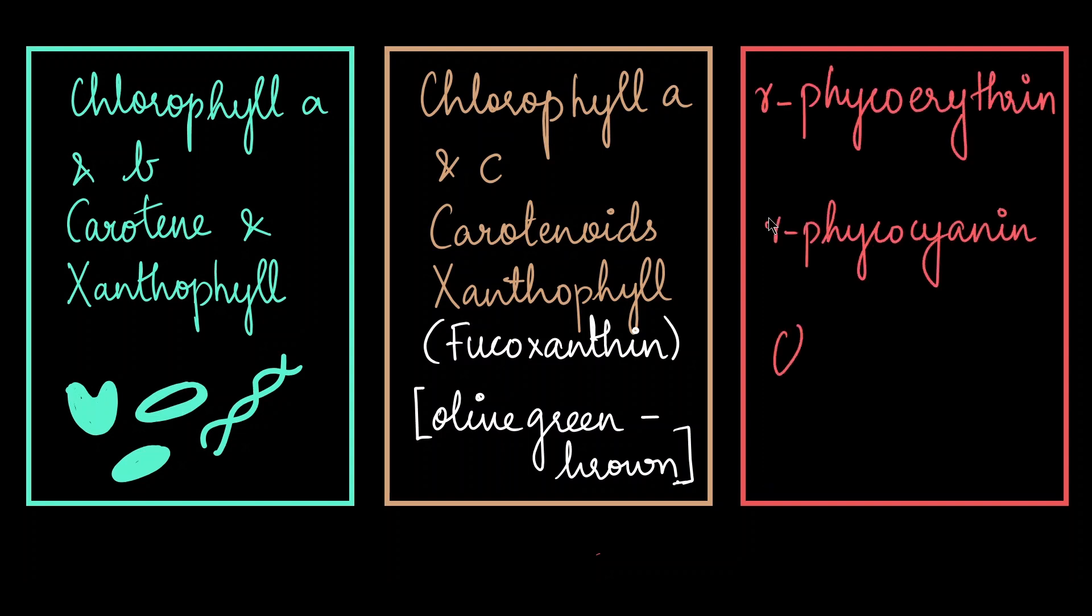Red algae have phycoerythrin, phycocyanin and chlorophyll a and d. You should know that red algae doesn't always appear red in color. So red algal color is based upon the ratio of the red pigment and the green pigment and this ratio can change depending upon where the algae is present. For example, let's say the algae is in deep waters where there is little to no sunlight. They develop more red pigments which are able to absorb the light at short wavelengths and hence they appear red.